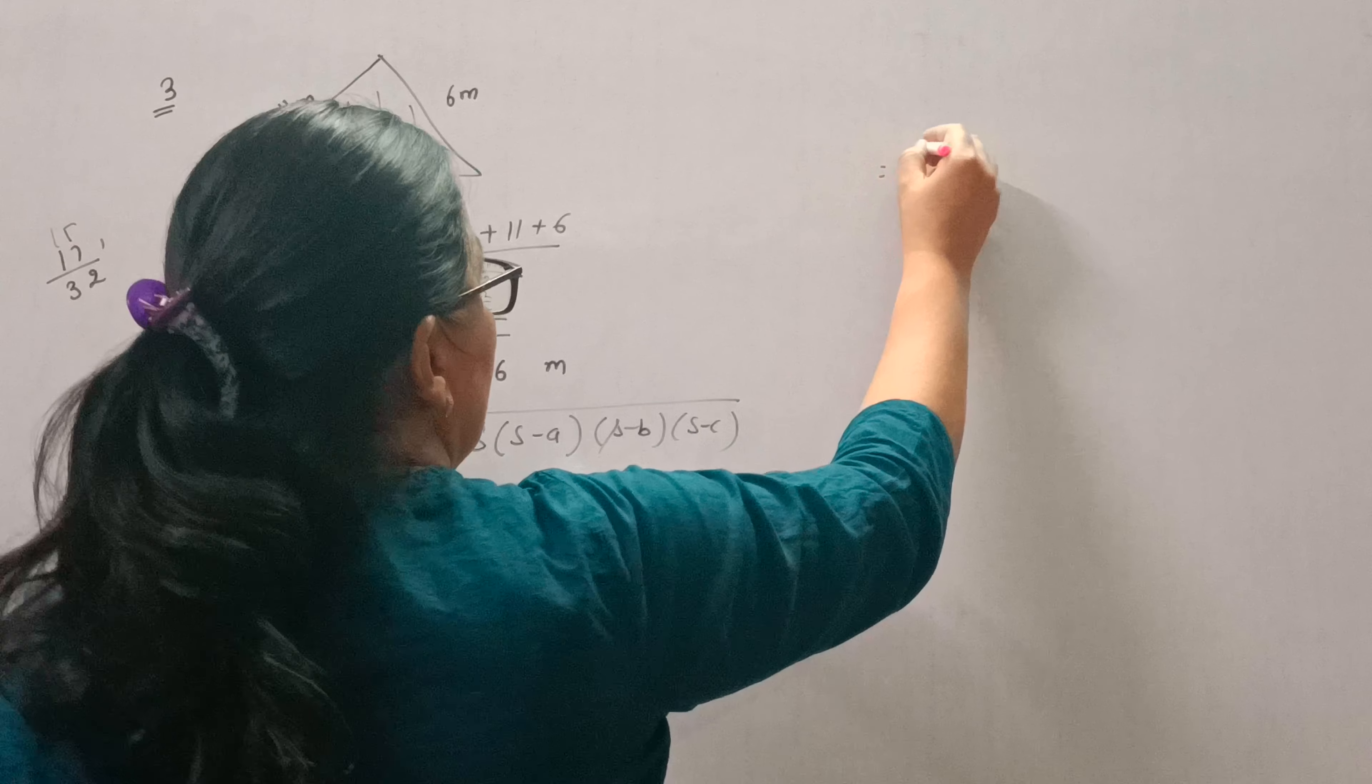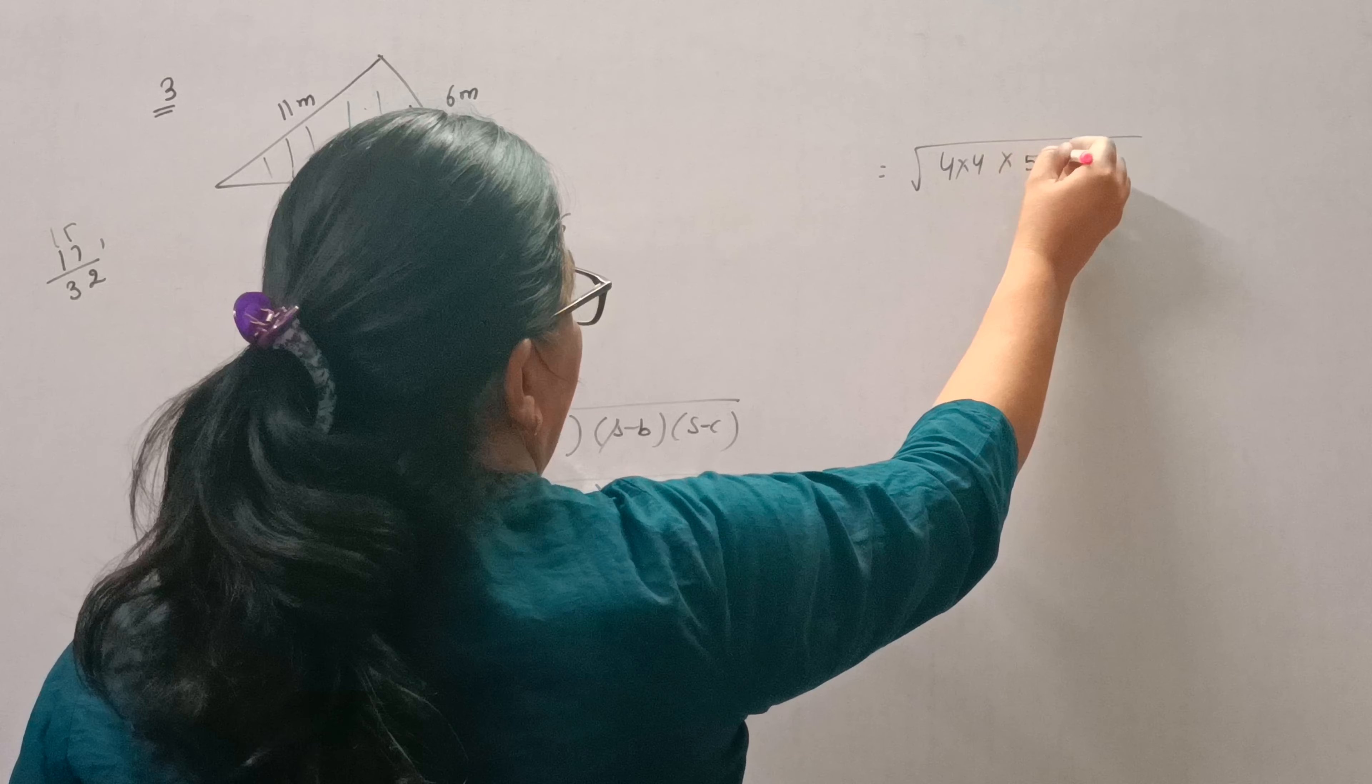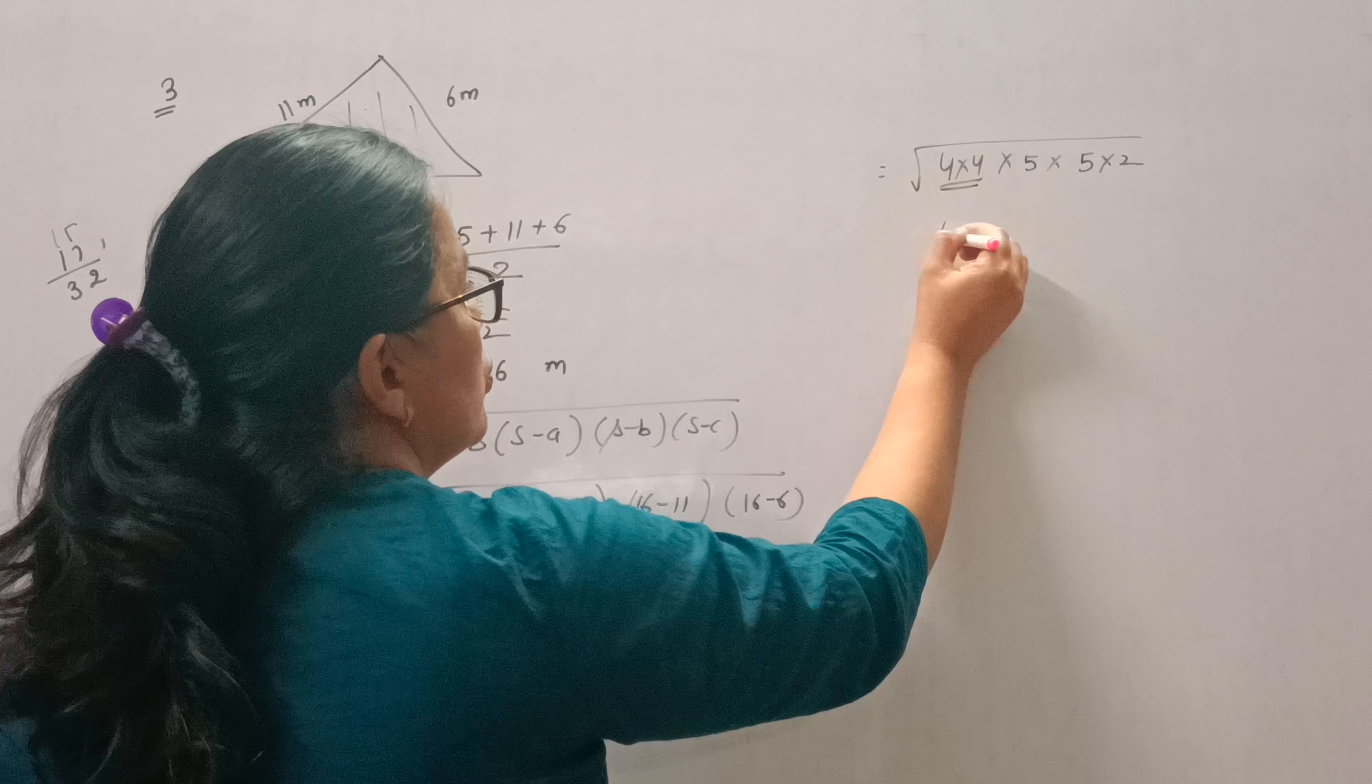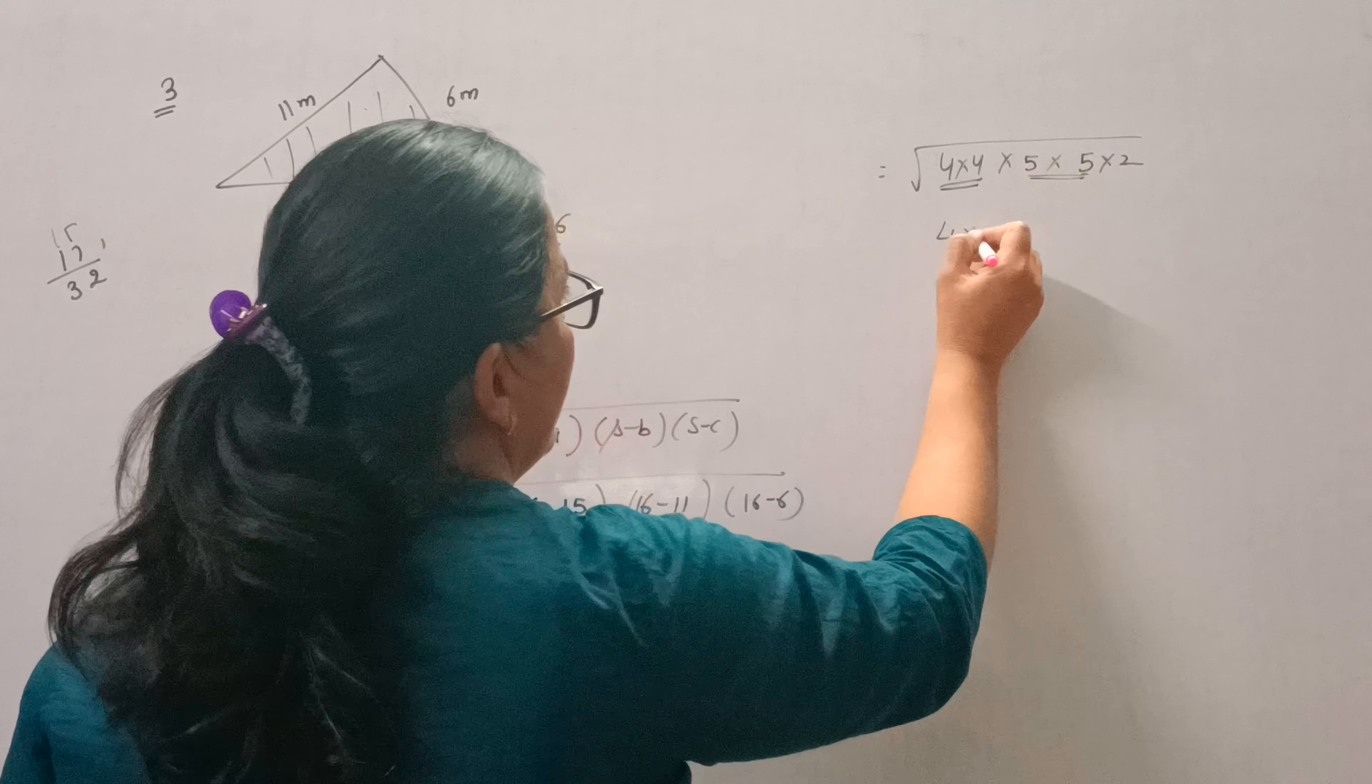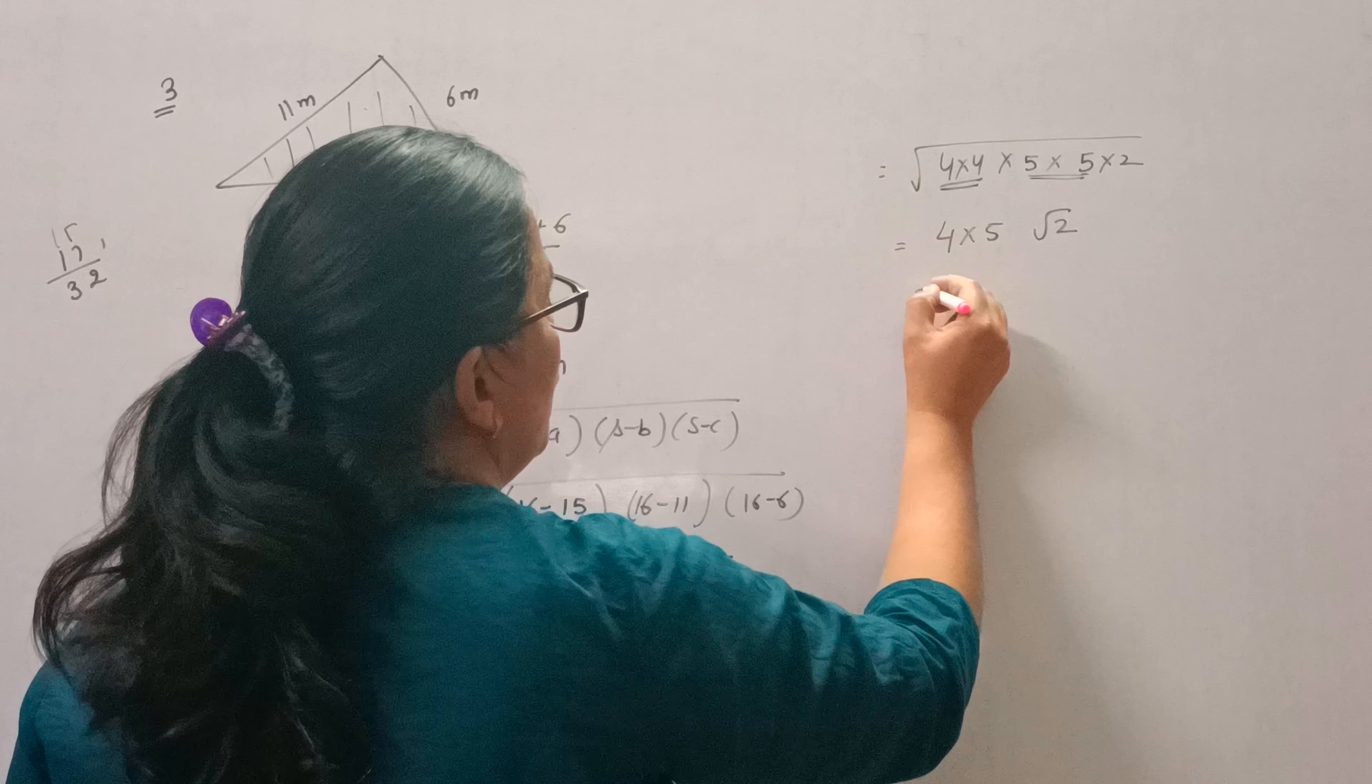Now see 16 means 4, 4's are 16. And 10 means 5, 2's are 10. Now see there is a pair of 4 so 4 will come out. Again there is a pair of 5 so 5 will also come out of the square root. 4, 5 is 20.